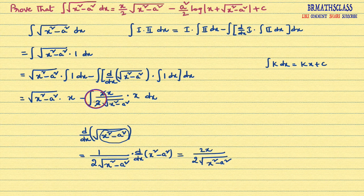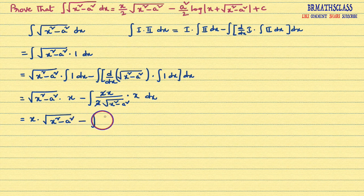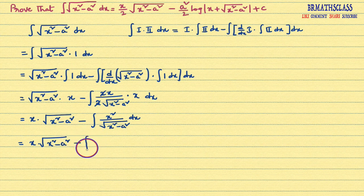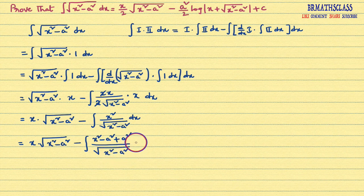Writing it neatly, we get x into root over x square minus a square minus integral of x into x, which is x square, divided by root over x square minus a square dx. So that equals x into root over x square minus a square minus integral of x square divided by root over x square minus a square dx.